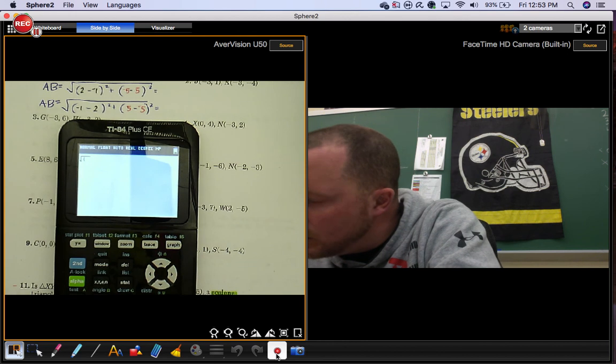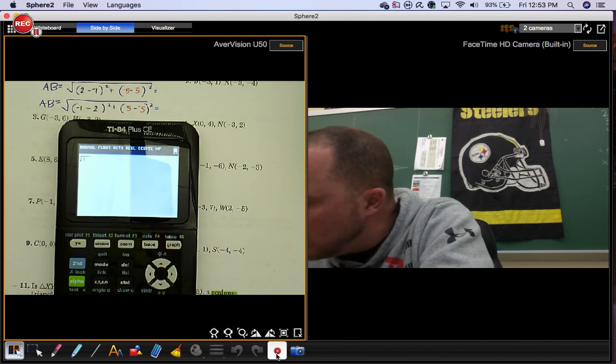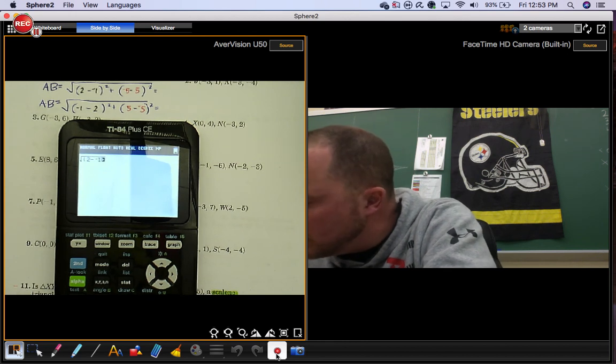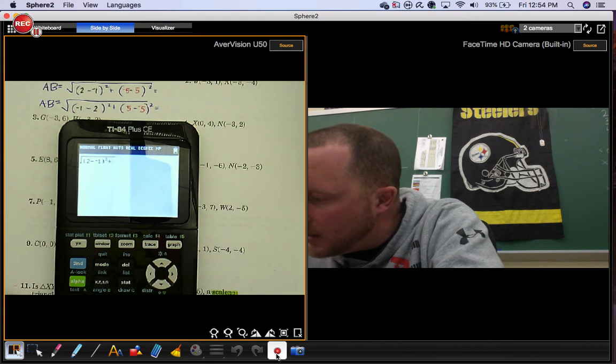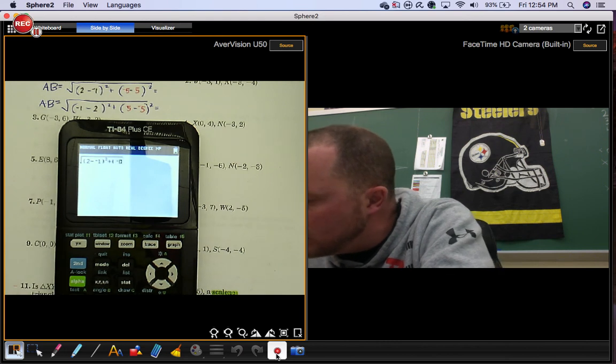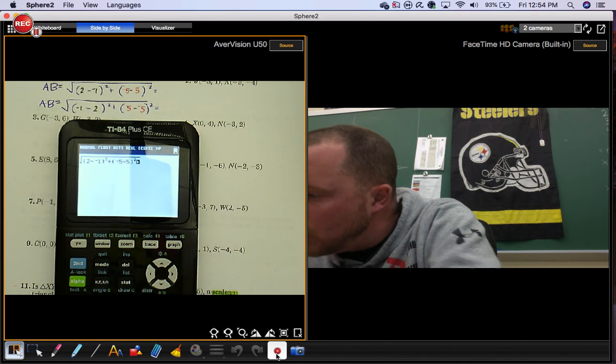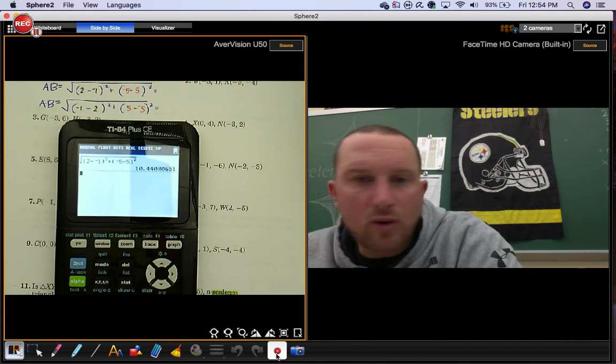So we're going to take the square root of our x's, 2 minus negative 1 squared. We're going to add that to our y values, minus 5, negative 5, minus 5 squared. It gives you this answer, 10.44.